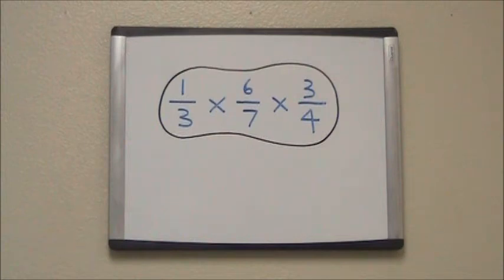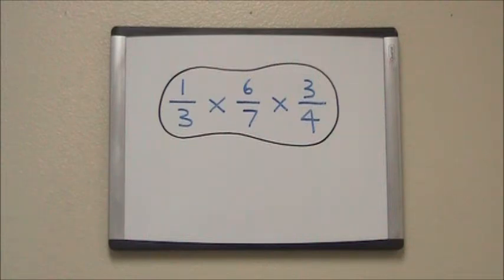First we look at the first set of fractions, one-third and six-sevenths. We can see that three goes into six evenly, so we can cross-cancel there. We divide both the three and the six by three.